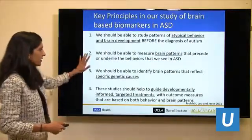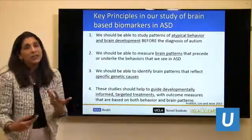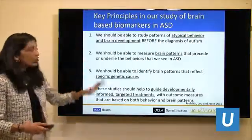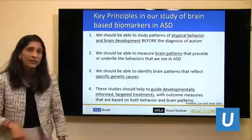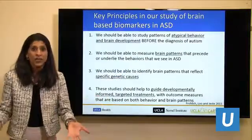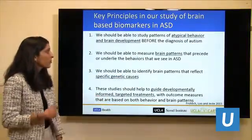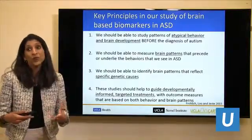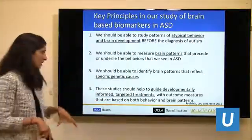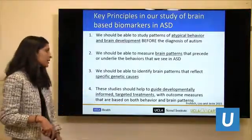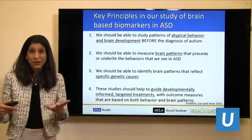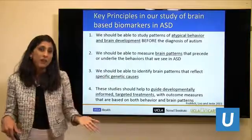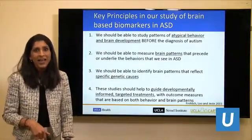Dan Geschwind, who runs our Autism Center, coined the term that autism is a 'developmental disconnection' — a really nice way to think about the neurobiology. Connections in the brain are not forming in a typical pattern, occurring early but continuing over development. We believe there are ways to modify some of those trajectories with intervention. Based on this, much of our work at UCLA focuses on biomarkers — we believe we should be able to study patterns of atypical brain development before autism is diagnosed, identify brain patterns reflecting specific genetic causes, and ultimately guide developmentally informed, biologically-based targeted treatments with outcome measures based on both behavior and brain pattern.